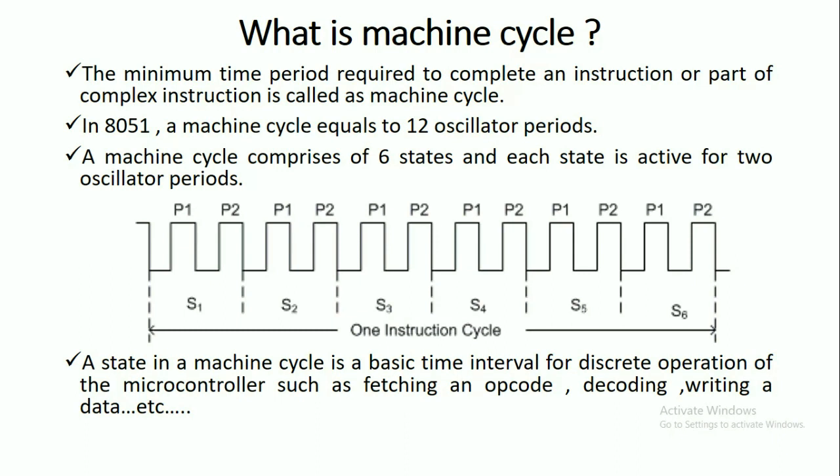So here it is given in the diagram. This is one machine cycle which contains 12 oscillator periods. So a machine cycle comprises of six states.